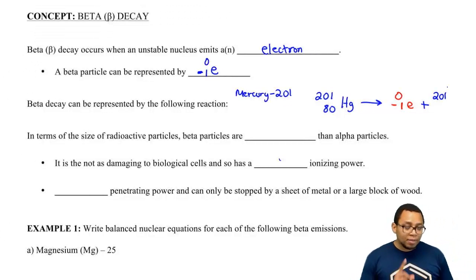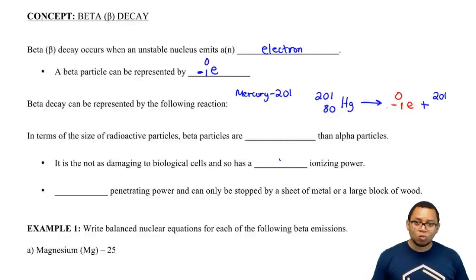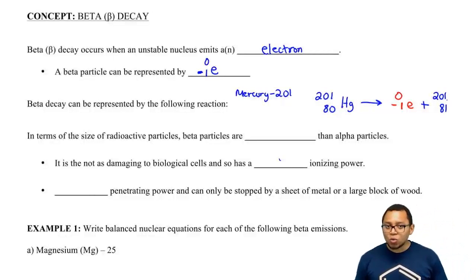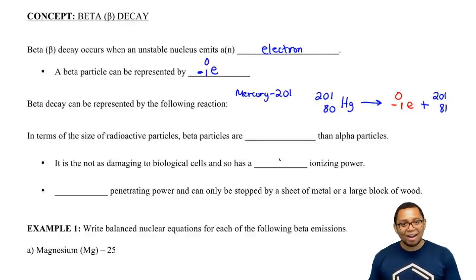And then here, we have to be very careful. Here this is minus 1. So minus 1 plus what gives me 80? Well, the answer would have to be 81. Because 81 minus 1 gives me the 80 that I had originally. So just remember that.